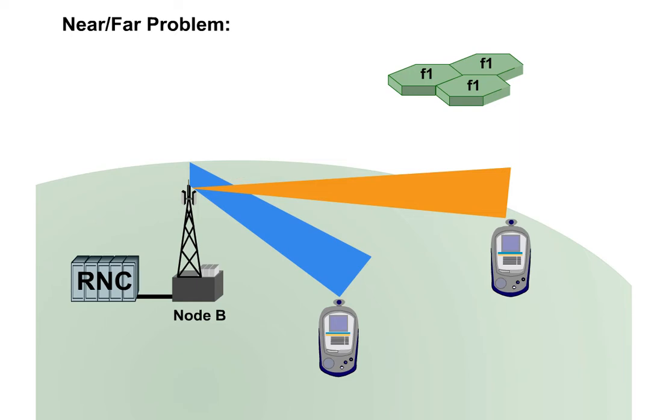Power control takes over the task of adapting the transmit power, so signals are transmitted with just enough power to be received by the Node B. To this end, UMTS uses three different kinds of power control.